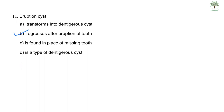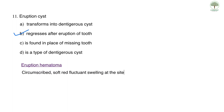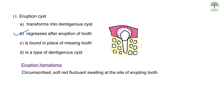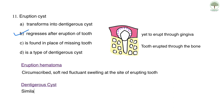Question eleven: eruption cyst — which statement is correct? The correct answer is B, it regresses after the eruption of teeth. An eruption cyst or eruption hematoma is present only within soft tissue, associated with an erupting tooth, seen as a circumscribed soft fluctuant swelling after the tooth has erupted through bone but before erupting through soft tissue. It shares histological features with dentigerous cyst but cannot transform into one, since by definition a dentigerous cyst is always associated with an impacted tooth. It requires no treatment and ruptures spontaneously.